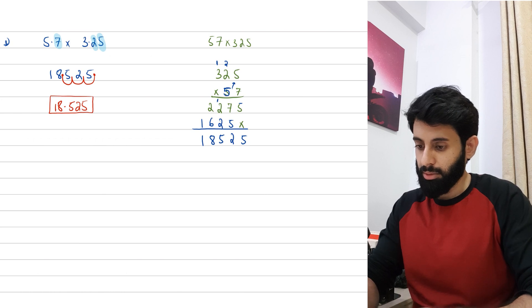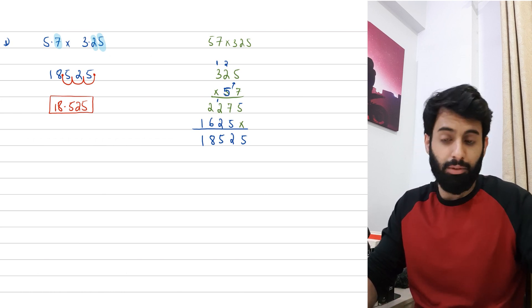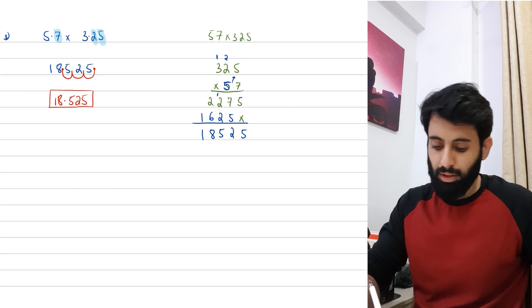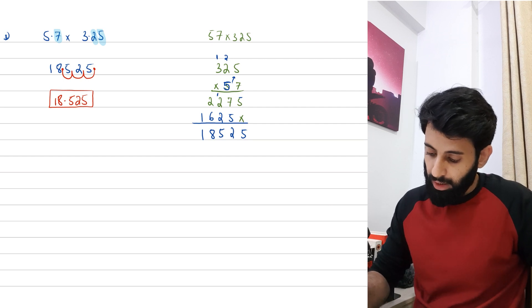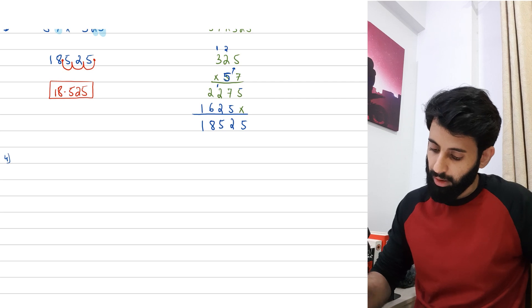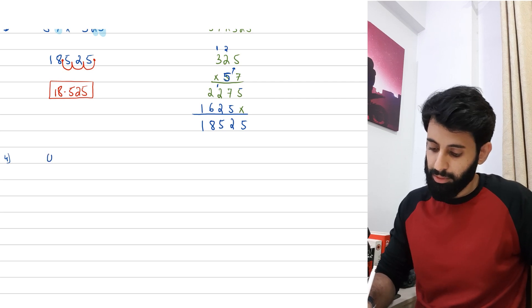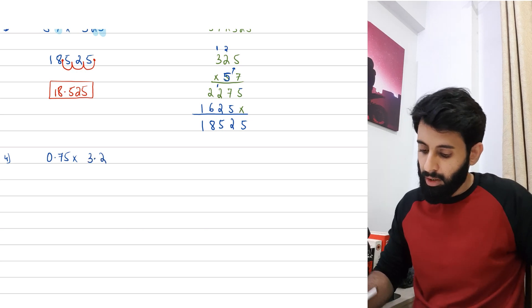One thing that I'm going to do is check your answer using a calculator, and 18.525 is the correct answer. Like I said in the last video, this is something where you can just make questions up on your own and multiply them and then use a calculator to see whether you've done it correctly or not.